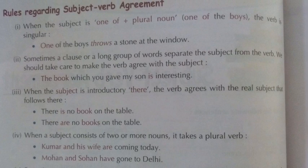Rule two: sometimes a clause or a long group of words separates the subject from the verb — we should make the verb agree with the actual subject. Sometimes sentences have many words or clauses between the subject and verb. We must keep the main subject in mind. For example: 'The book which you gave my son is interesting.' You might think 'you' or 'my son' is the subject, but the main subject is 'the book' — which is singular — so we use 'is'. Watch this video as many times as you need, because all these rules will be very useful.